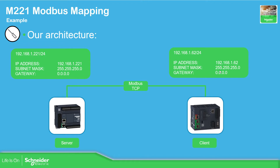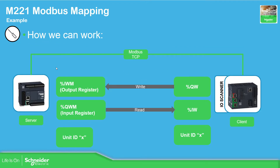You can see here the configuration I want for these devices. The idea of Modbus mapping is that once you enable it on the M221, it creates a different area — a %IW and %QW area — where another device can read and write information. Once this area is created, another device just needs to use a specific unit ID to access these registers. On the M262, I'm going to define the IO scanner using %QW and %IW, and I also need to add this unit ID, which must match the one on the M221 side.